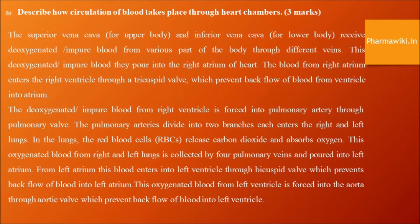The deoxygenated blood from the right ventricle is forced into the pulmonary artery through the pulmonary valve. The pulmonary arteries divide into two branches, each entering the right and left lungs. In the lungs, red blood cells release carbon dioxide and absorb oxygen. This oxygenated blood from both lungs is collected by four pulmonary veins and poured into the left atrium. From the left atrium, blood enters the left ventricle through the bicuspid valve, which prevents backflow. This oxygenated blood from the left ventricle is forced into the aorta through the aortic valve, which prevents backflow into the left ventricle.